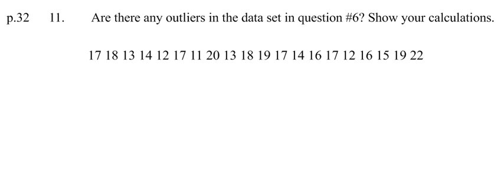So here's the data from question number 6. Outliers are data points that are either much higher or much lower than the rest of the data. So immediately we take a look at our list and we see if there's any values that stand out, such as 22 is the highest data point, 11 is the lowest data point, but are they significantly higher or lower than the rest of the data?